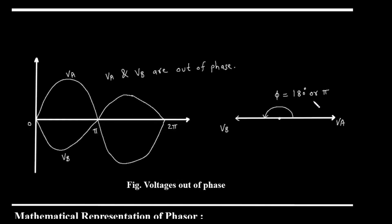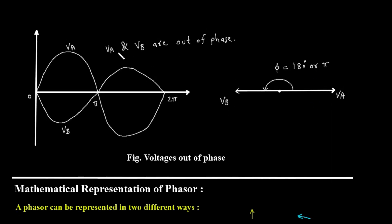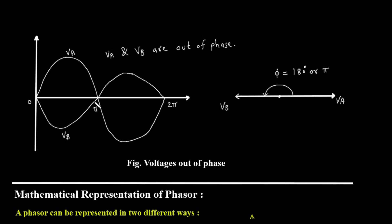Finally, we have a figure showing voltages out of phase. This is a special case where the phase difference is 180 degrees, or pi radians. In the waveform diagram, when VA is at its positive peak, VB is at its negative peak — they are perfect mirror images of each other across the horizontal axis. In the phasor diagram, the phasor for VA would point to the right, and the phasor for VB would point in the exact opposite direction, to the left. The angle between them is 180 degrees.